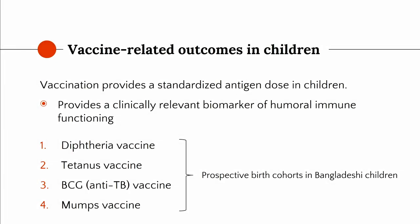Moving on to vaccine-related outcomes in children — vaccination really provides an outstanding way to look at humoral immune response. It is an internationally certified dose given to children everywhere around the world at the same dose and the same age. It's a completely standardized immune delivery system, and it provides a clinically relevant biomarker of humoral immune functioning.